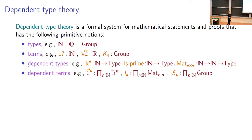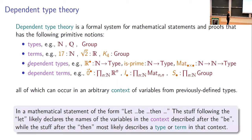We also have dependent terms that inhabit these dependent type families. Inside n-dimensional Euclidean space for any n, we have the zero vector. As an n by n matrix, we always have the identity matrix. For any n, there's a symmetric group of that order — S_n is a term of type group for any natural number n. All of this can occur in an arbitrary context of variables from previously defined types.